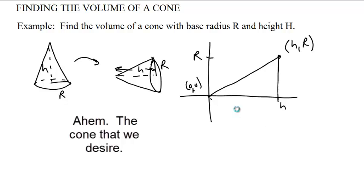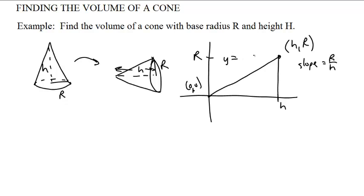What is the equation of that line? The slope is rise over run, so it's r over h. And it goes to the origin, so it's zero, zero. This is just y equals r over h times x.